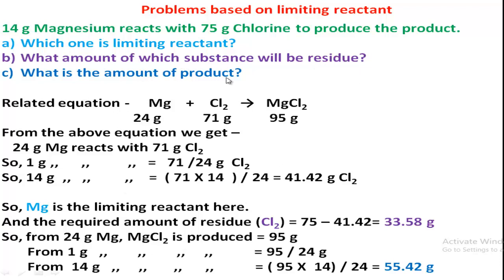Now, what is the amount of product? The amount of product is calculated from the amount of limiting reactant. Since magnesium is the limiting reactant: from 24 grams of magnesium, 95 grams of magnesium chloride is produced. So from 14 grams of magnesium, we get 55.42 grams of magnesium chloride. This is the answer to the third question.